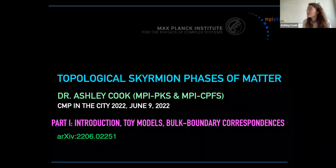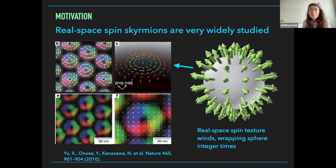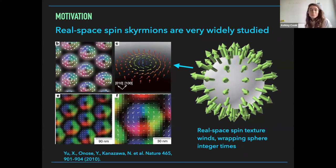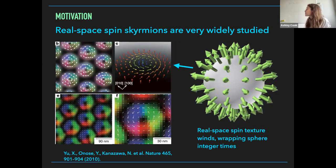This is a title screen for part one, with the archive number. As motivation, I think the way to motivate this is to first ask: why am I calling these topological skyrmion phases of matter? The best way to explain that is to start from the examples of skyrmions that are probably most widely known in condensed matter physics, which are these magnetic skyrmions.